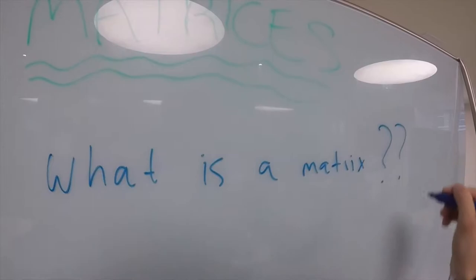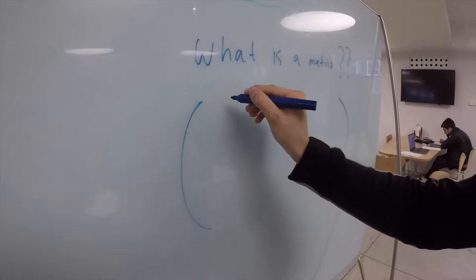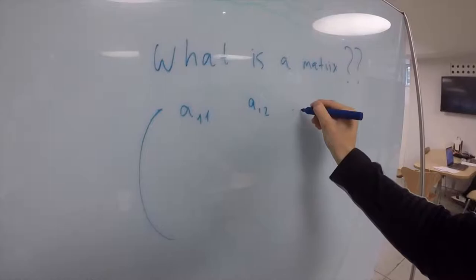A matrix is a two-dimensional arrangement of numbers in rows and columns enclosed by a pair of square brackets in the form shown on the board.